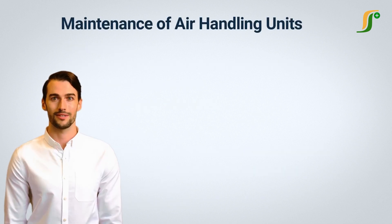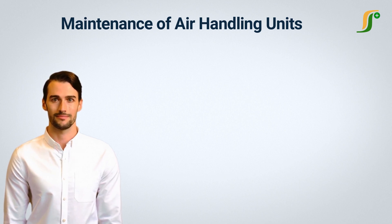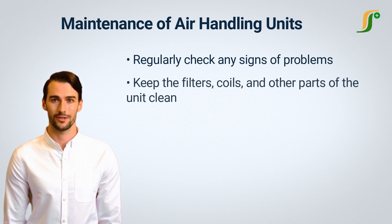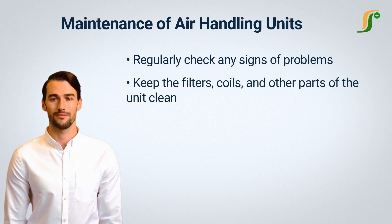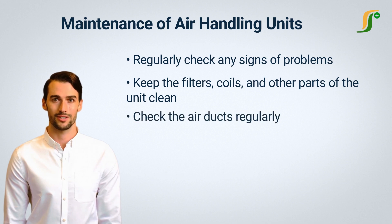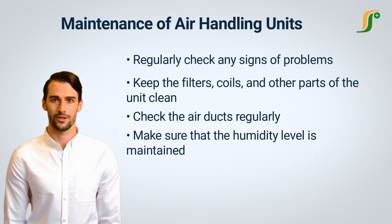Here are some tips for maintenance of air handling units. To run AHUs for a long time, timely maintenance is essential. A maintenance schedule must be followed strictly. Regularly check for any signs of problems and replace parts immediately if required. Keep the filters, coils, and other parts of the unit clean, as regular cleaning helps the unit run efficiently. Check the air ducts regularly and ensure they are free from pests and debris. Make sure that the humidity level is maintained at all times, as too low or too high humidity levels can damage the air handling unit.